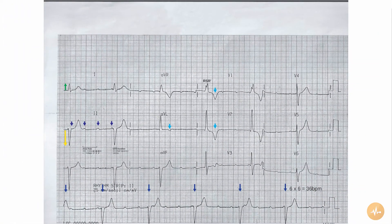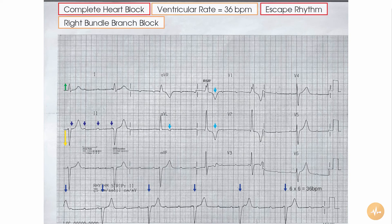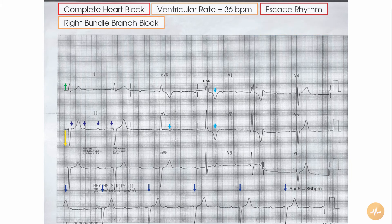The T waves are deeply inverted in leads V1 and V2 and inverted in AVL. In summary, the ECG shows the patient to be in complete heart block with a ventricular rate of 36 beats per minute and a right bundle branch block pattern. Given the relatively short QRS complexes, the escape rhythm here is probably coming from high in the ventricular conduction pathway. The treatment here is likely to involve insertion of a pacemaker.